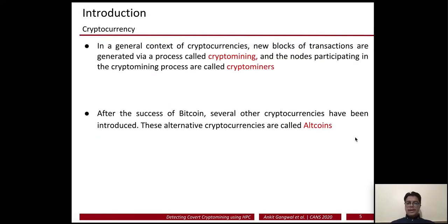In the general context of cryptocurrencies, new blocks of transactions are generated via a process called crypto mining, and the nodes that participate in this mining process are called crypto miners. After the success of Bitcoin, several other cryptocurrencies were introduced to the market, and these alternative cryptocurrencies are called altcoins.